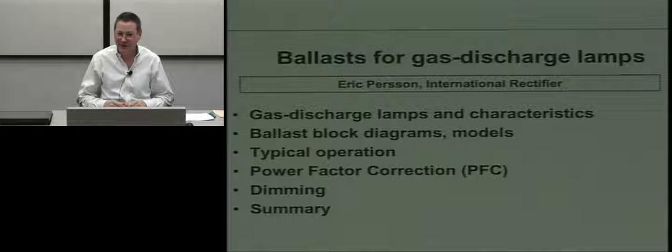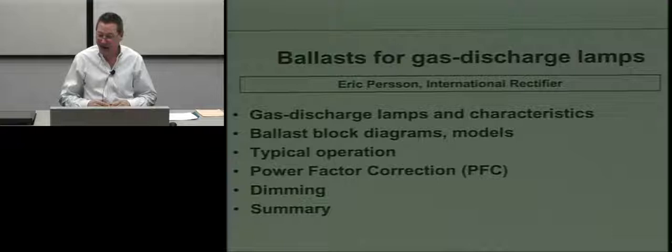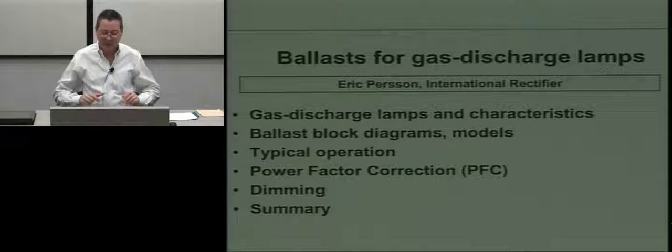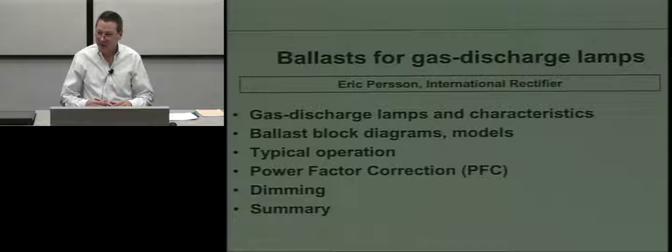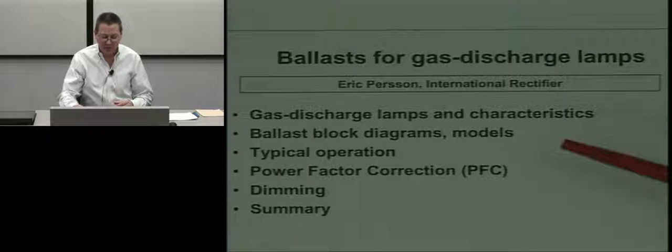Good morning everyone, I'm Eric Person and I'll be covering today a new topic: ballasts, also known as power supplies for gas discharge lamps, which is a generic term encompassing fluorescent and also HID lamps. You might think everything's going to be LED now, but LEDs are coming along pretty well — there's still a lot of fluorescent lamps sold and from a cost standpoint they're still pretty attractive, so you'll see these for a long time to come. Today I'll cover the characteristics of the lamps themselves and why you need a power supply or a ballast, going through the block diagram and the power circuits used to operate these.